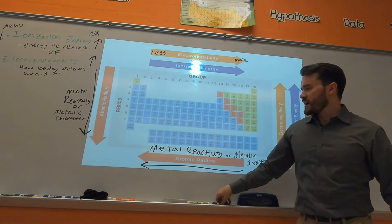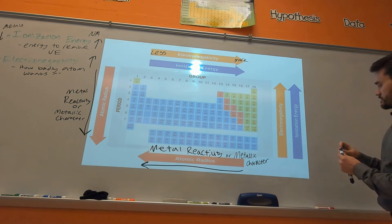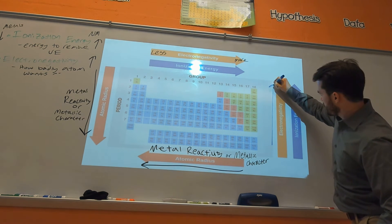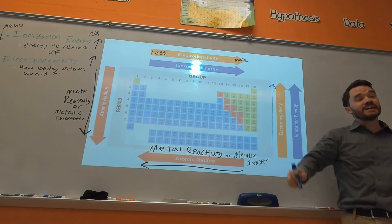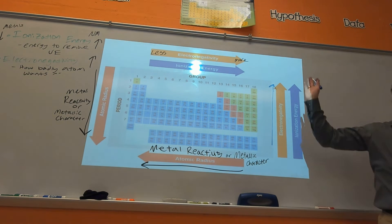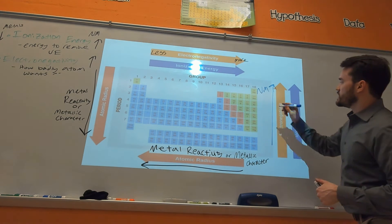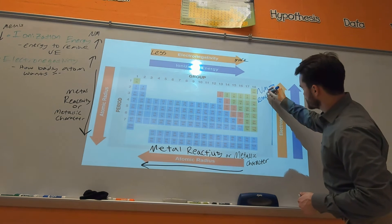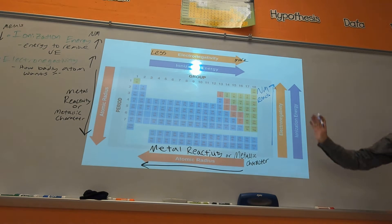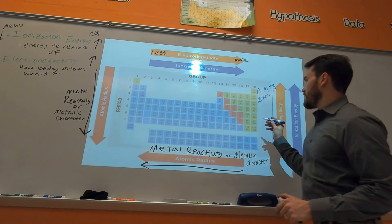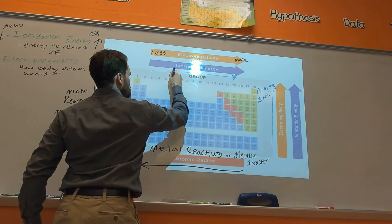Something else to add: non-metal reactivity. Non-metals do the opposite of metals — as you go up on the periodic table, non-metal reactivity increases. And as you go from left to right, non-metals also get more reactive.